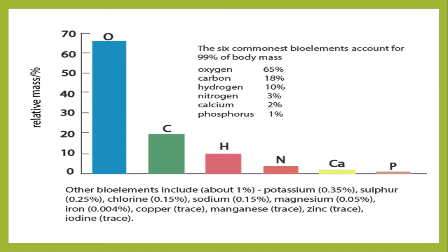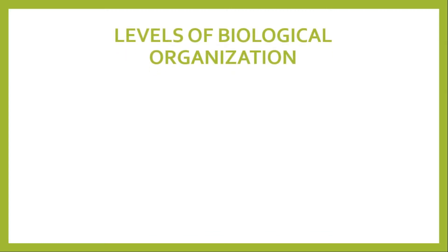The remaining 10 minor bio-elements together contribute 1% to the living body: potassium is 0.35%, sulfur is 0.25%, chlorine is 0.15%, sodium is 0.15%, magnesium is 0.05%, iron is 0.004%, and copper is present in trace amounts.